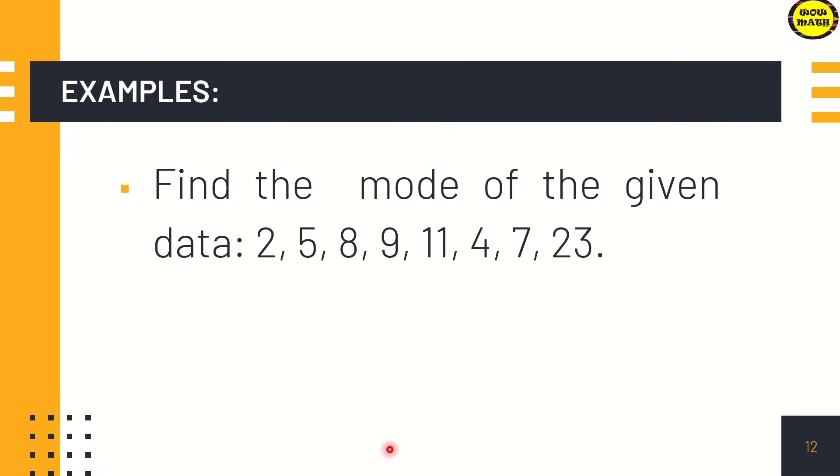Another example: find the mode of the given data 2, 5, 8, 9, 11, 4, 7, and 23. When we arrange it in ascending order, we cannot find a mode. Therefore, there is no mode.